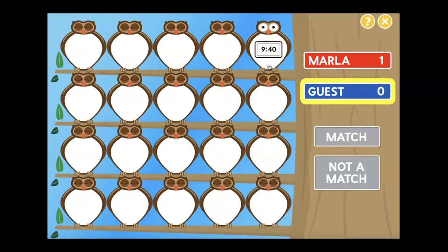9:40. So that's the digital time. I need to match it up with the analog clock that says 9:40. Let's see. 9:40, 11:30. Not a match.